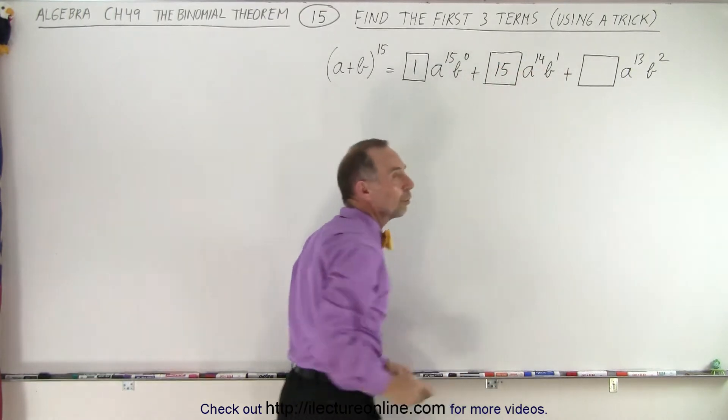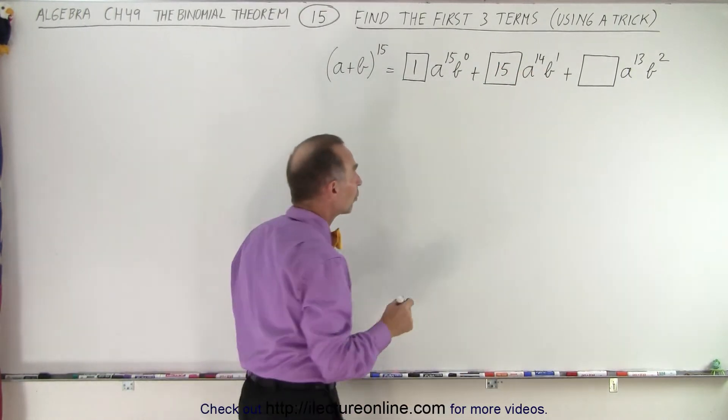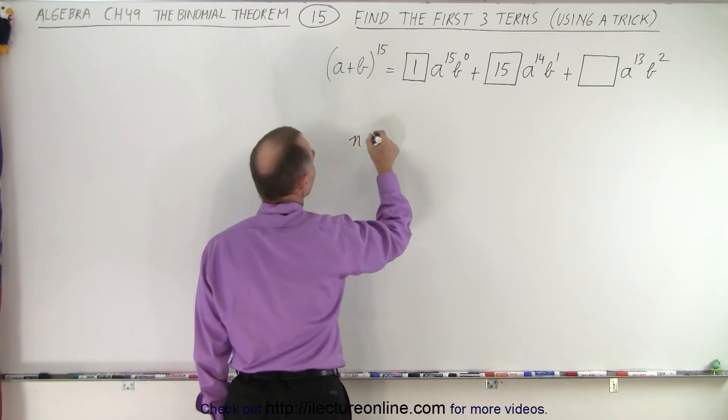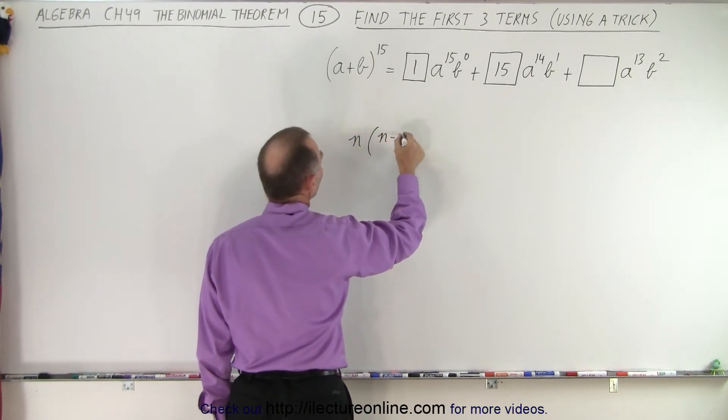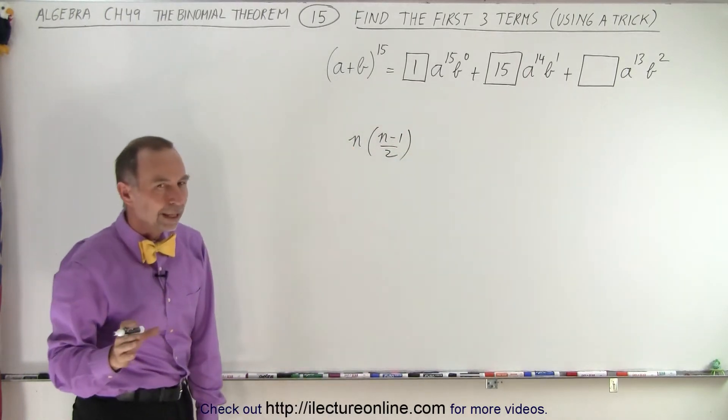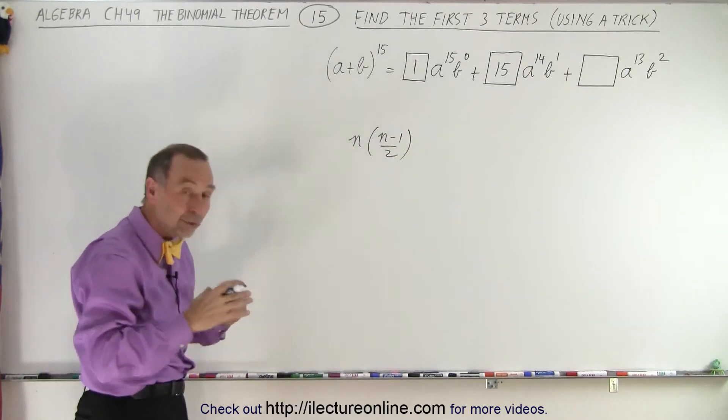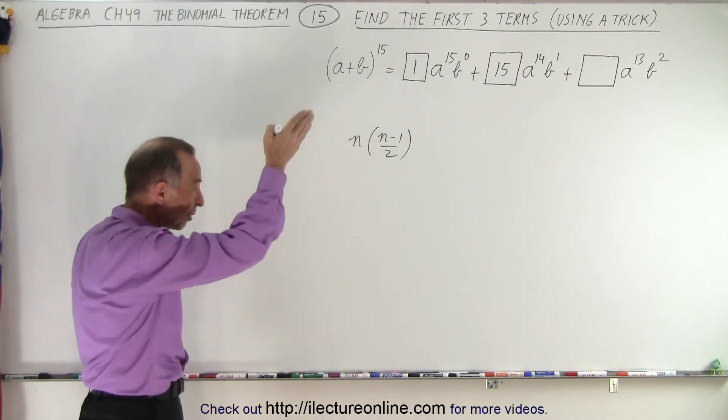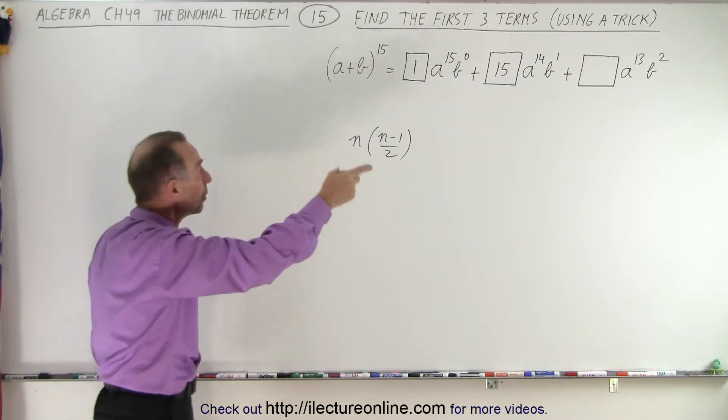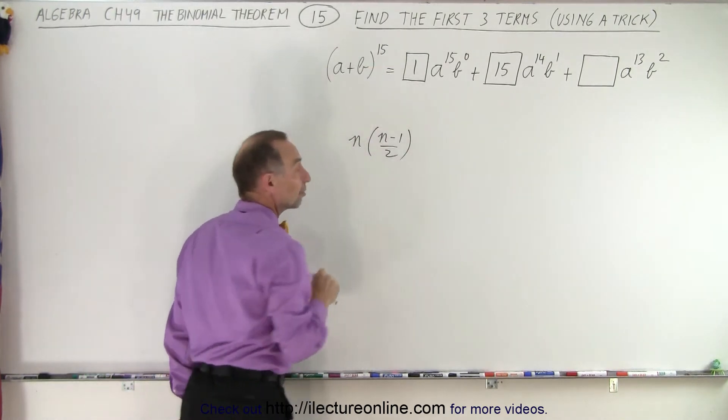But what about the third coefficient? Well it turns out that the third coefficient is going to be equal to n times n minus 1 divided by 2. Remember that pattern that we saw with Pascal's triangle where the first numbers were always 1. The second numbers were always equal to the same number as the exponent of the binomial expansion.